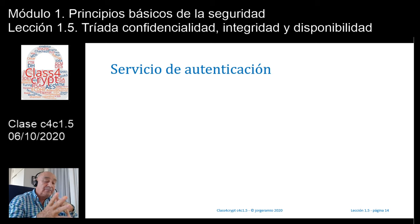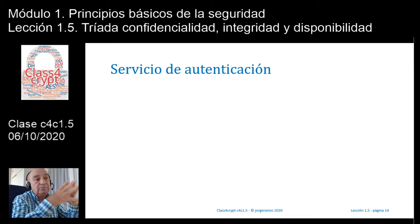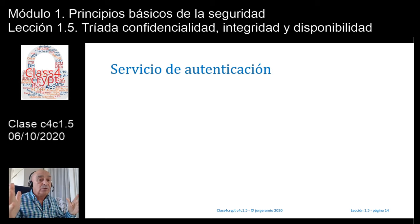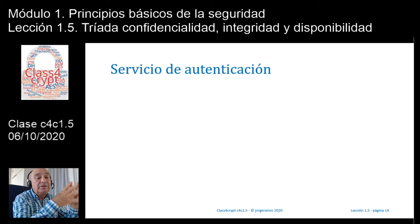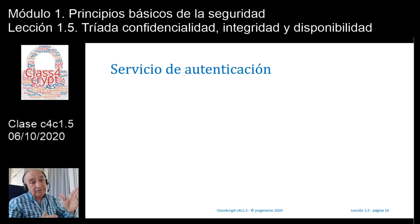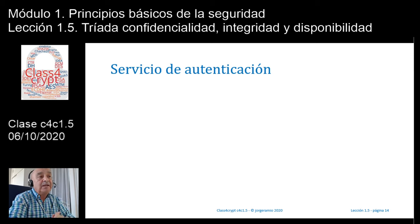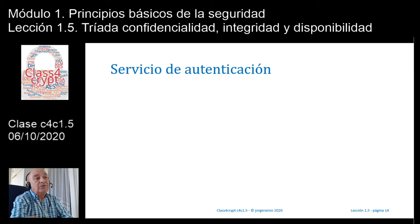Además de estos tres principios de la seguridad —confidencialidad, integridad y disponibilidad—, también tenemos unos servicios importantes que van a permitir formar lo que más adelante llamaremos los pilares de la seguridad de la información. Estos servicios van a ser cuatro: el servicio de autenticación, el servicio de control de acceso, el servicio de no repudio y el servicio de trazabilidad. Esos cuatro servicios más los tres principios básicos me van a conformar una especie de pirámide de siete columnas, que son las que me dirán que la información es de calidad.